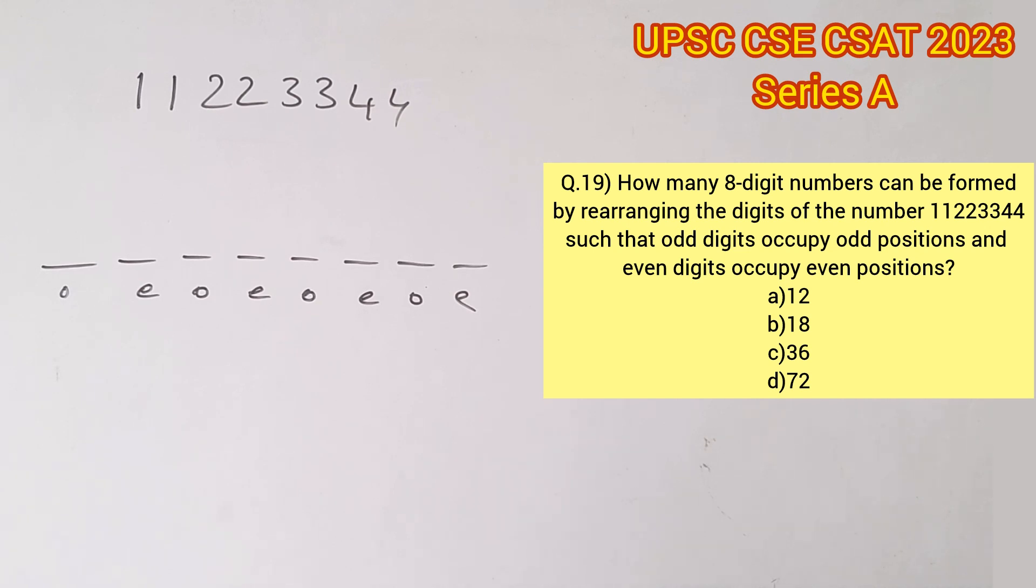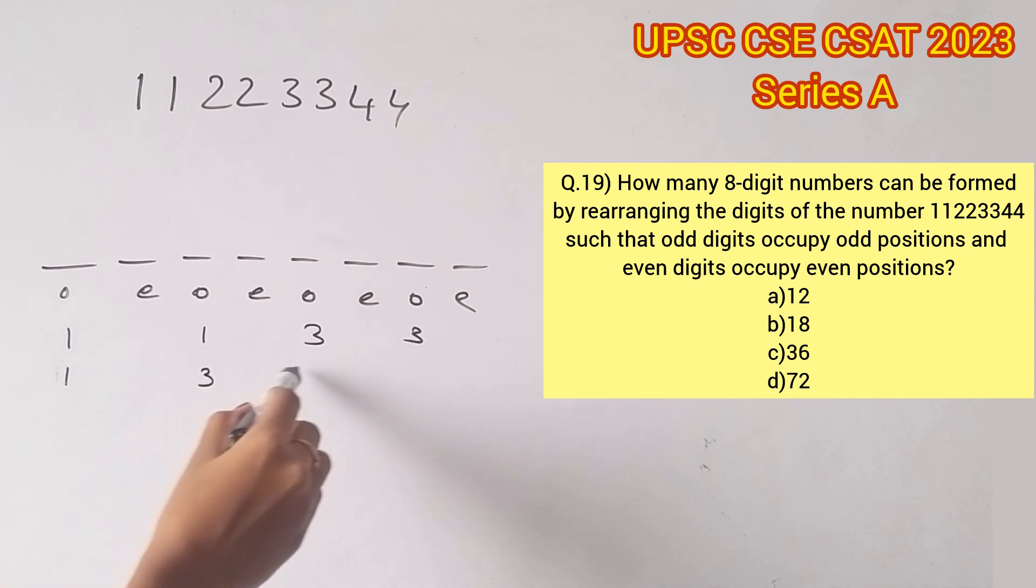the even values are 2 and 4. Now let's consider the odd places alone. Let's consider the case where the first odd digit is 1. The remaining can be filled in three different possibilities which are as follows. Now if